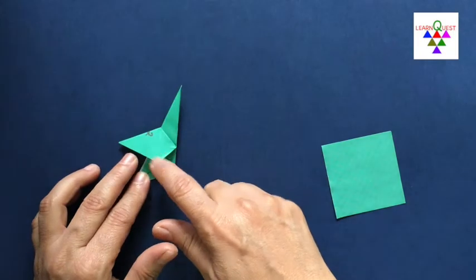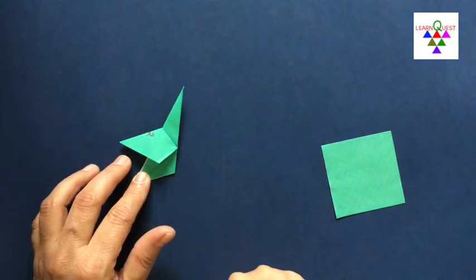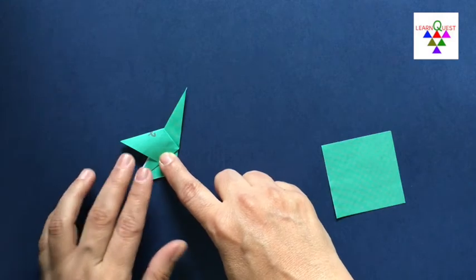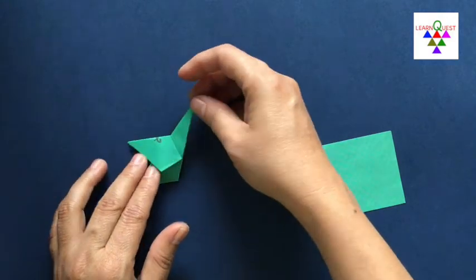Now this quadrilateral has changed and it has become a kite. Yes, it's a kite. Now let's turn the model.